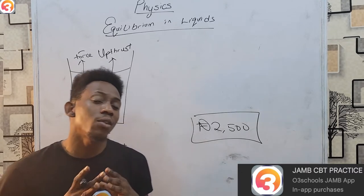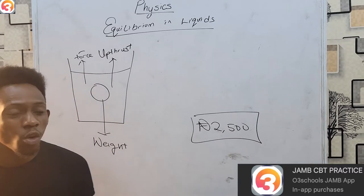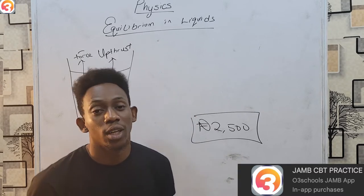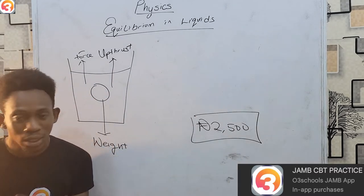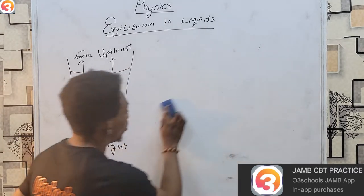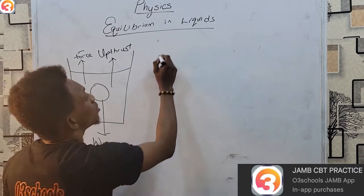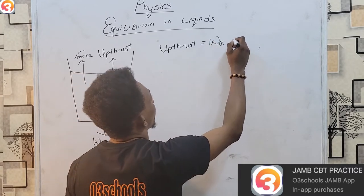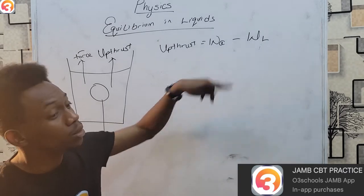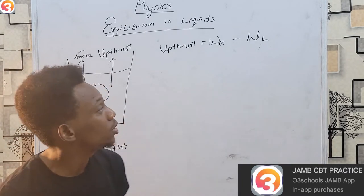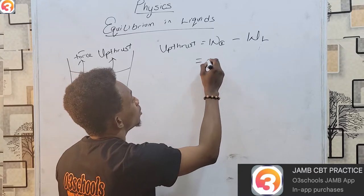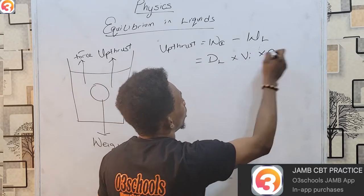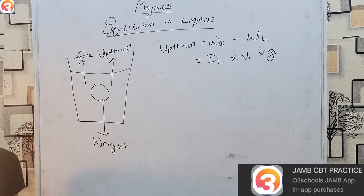If you have a big object that is partially immersed, only the volume within the liquid contributes to the upthrust — the part above is a non-factor. As such, upthrust can be quantified as: upthrust equals weight in air minus weight in the liquid. Or it can be given by the density of the liquid times the volume immersed times g.